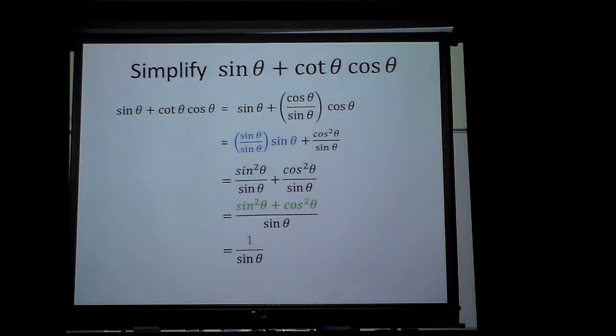And one over sine, oh, I can change that really easy to what? Cosecant. Hey man, I simplified that all the way down to cosecant by simply finding something I could do that could simplify and adding the fraction together. It's like once you find one step, sometimes the second one's not as hard, but always try to find one.